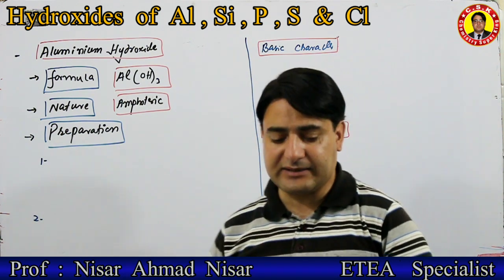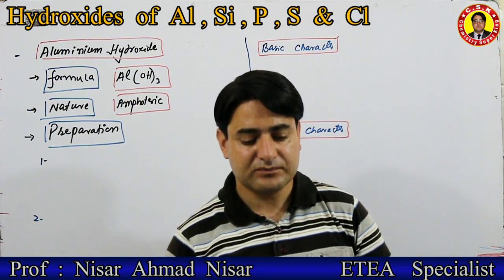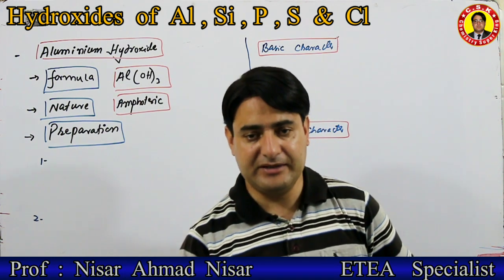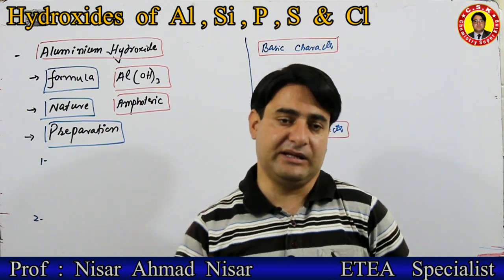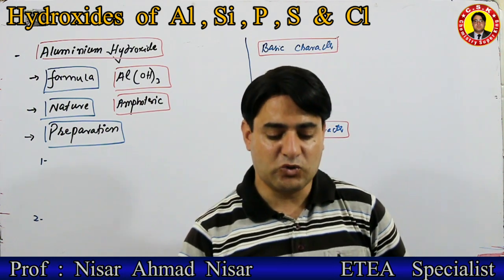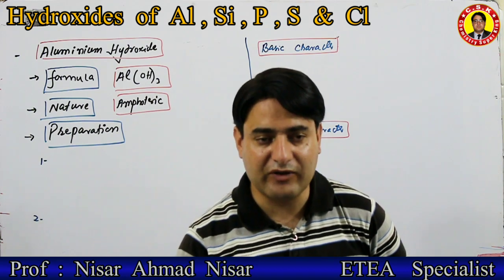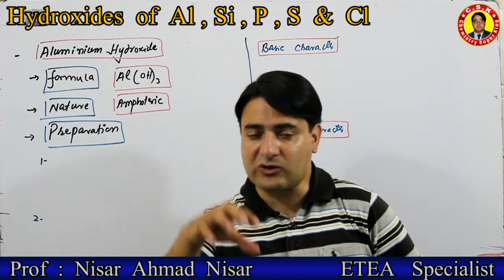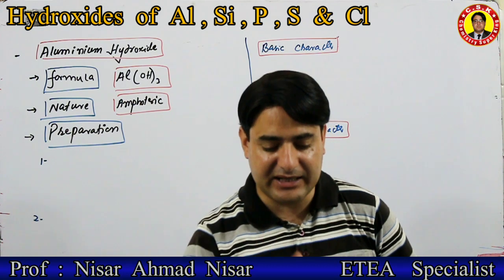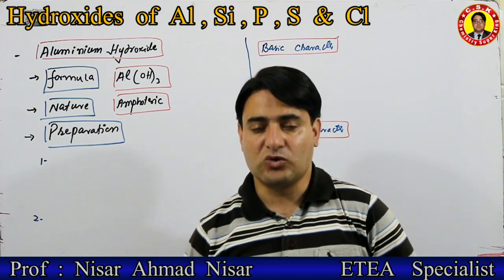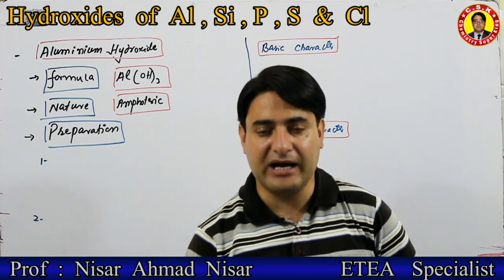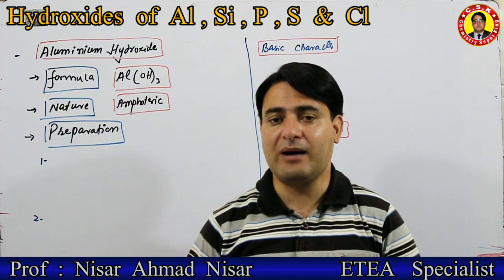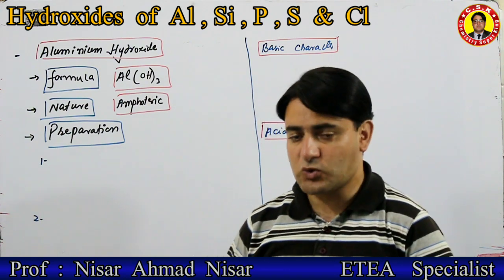Aluminium hydroxide کو ہم prepare کیسے کرتے ہیں؟ Aluminium hydroxide is prepared by adding alkali to an aqueous solution of aluminium salt. جب aluminium salt کے aqueous solution میں alkali add کریں تو ہمارے پاس aluminium hydroxide حاصل ہوتا ہے in the form of a precipitate.